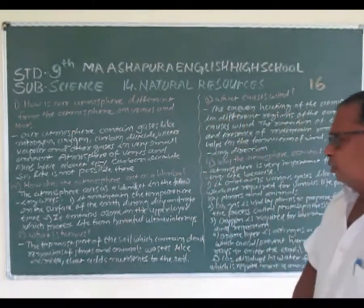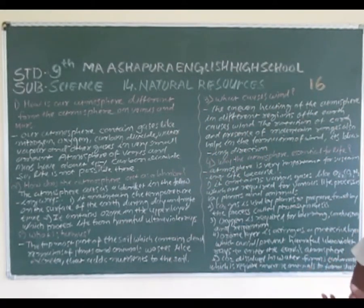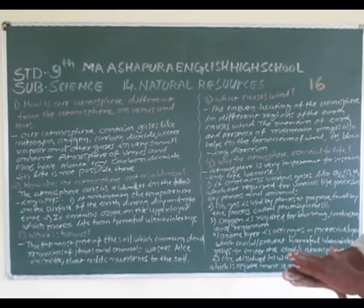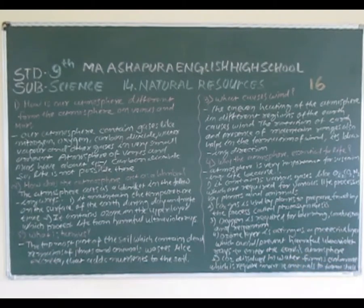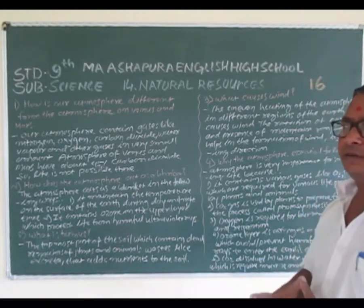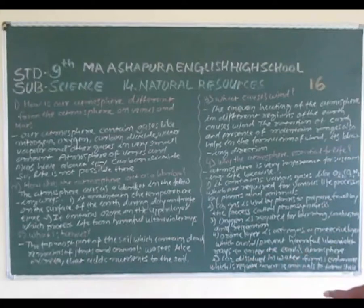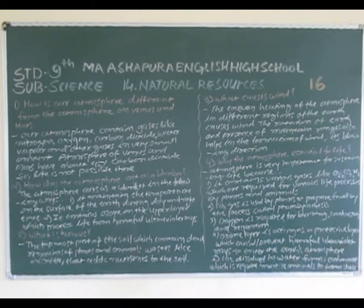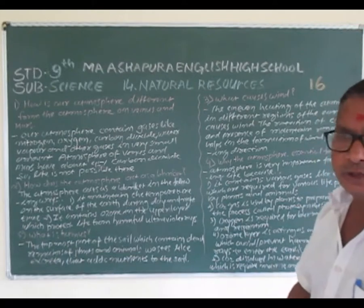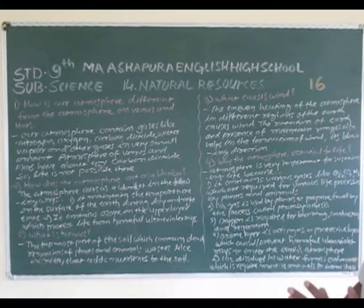Third question: What is humus? The topmost part of the soil which contains dead remains of the plants and animals — including dead animal bodies, dead plants, and waste like excreta — is added to the soil, and that adds nutrients to the soil. This is called humus.